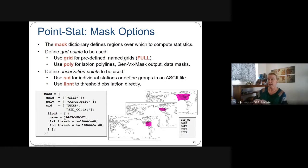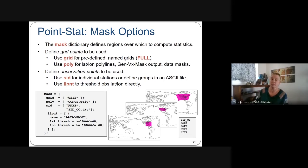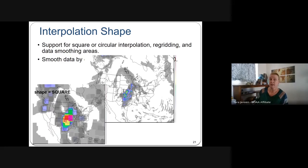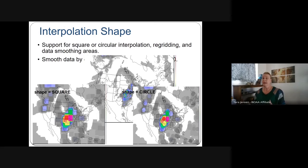Masking options include a grid, polyline, station ID for specific sites like KNFX, or a list of station IDs in ASCII format. There's also a lat-long box to include all points within a region around a lat-long point. For interpolation neighborhood shapes, we support both square (most common) and circular neighborhoods — useful for severe weather where events are defined within a circular radius like 40 km.